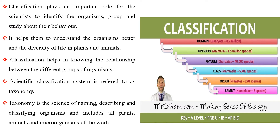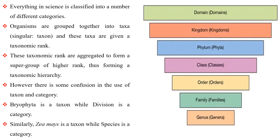Scientific classification system is referred to as taxonomy. Taxonomy is the science of naming, describing, and classifying organisms, and includes all plants, animals, and microorganisms of the world. Everything in science is classified into a number of different categories. Organisms are grouped together into taxa (singular: taxon), and these taxa are given a taxonomic rank. These taxonomic ranks are aggregated to form a supergroup of higher rank, thus forming a taxonomic hierarchy. However, there is some confusion in the use of taxon and category. Bryophyta is a taxon while division is a category. Similarly, Zea mays is a taxon while species is a category.